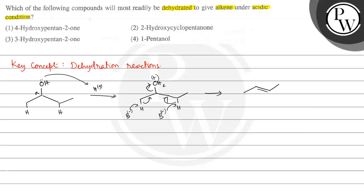So the reactivity is proportional to the acidity of these beta hydrogens. The more acidic the beta hydrogen, the more readily the dehydration will occur.